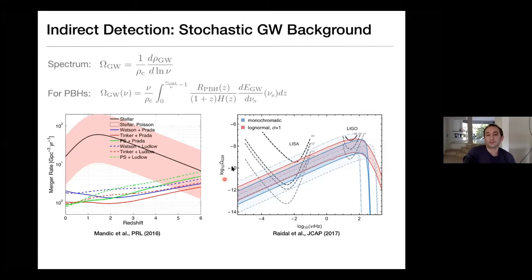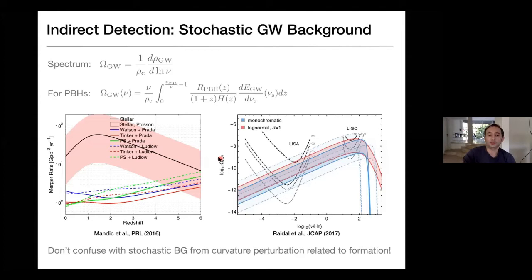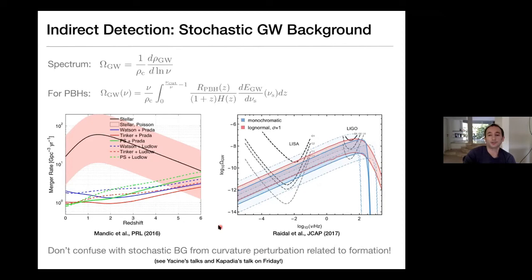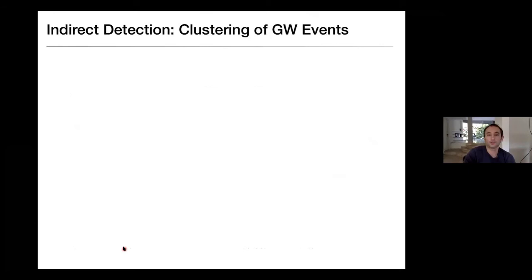This is a calculation of the contribution you'd expect for the total energy density in gravitational waves in the stochastic background from primordial black holes for different mass functions, plotted against the noise spectrum of different experiments. With LIGO currently, you should not necessarily expect a detection. But with LISA, you'll definitely be able to detect a signal. It's important not to confuse this stochastic background from sub-threshold events with the stochastic background of gravitational waves generated from the curvature perturbations that leads to the formation of the primordial black holes in the first place — that second contribution you'll hear about from Yassine later this week.